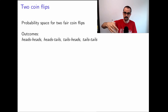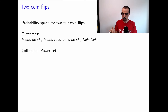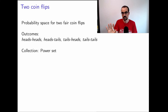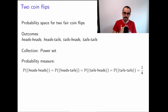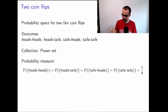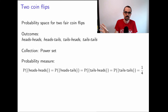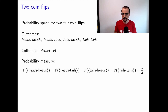The possible outcomes are HH, HT, TH, and TT. Our probability measure assigns each of these outcomes probability one-fourth, since the flips all have equal probability of being heads or tails. This is our probability space.